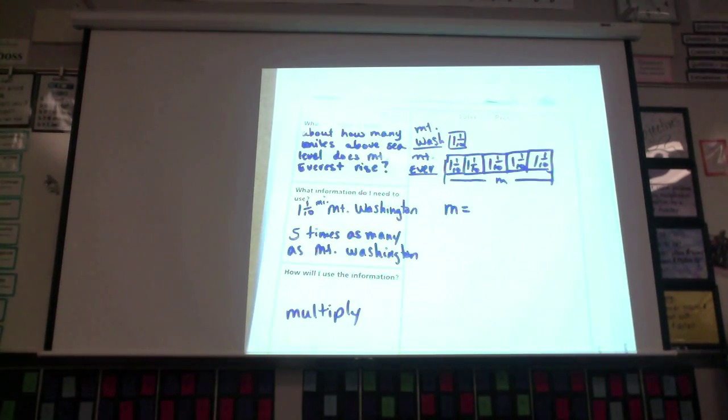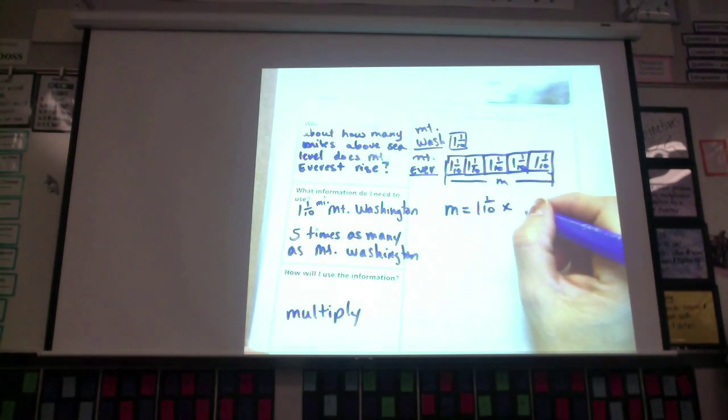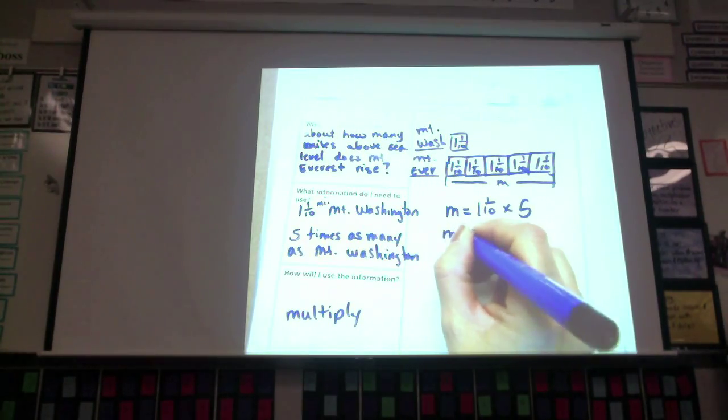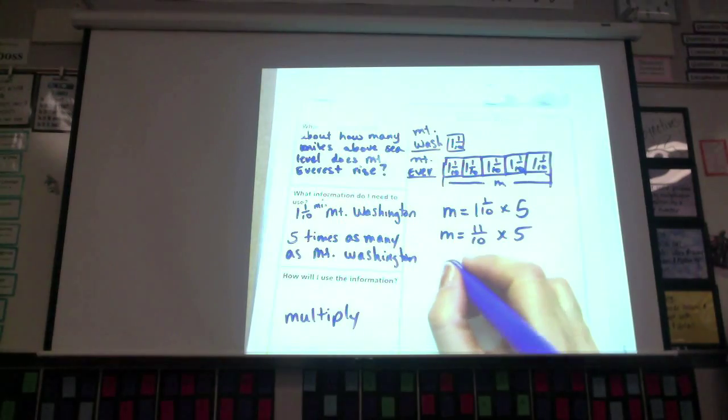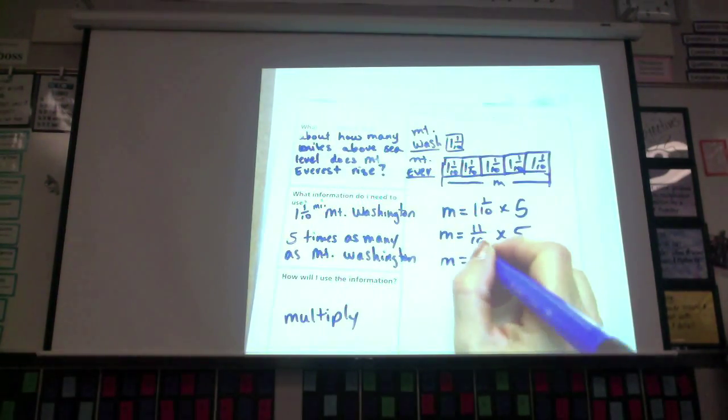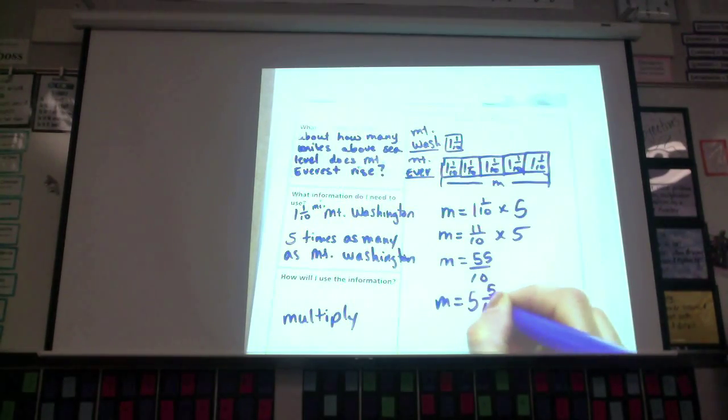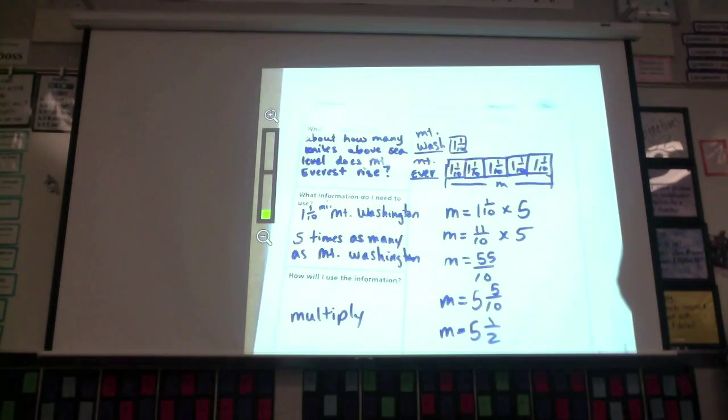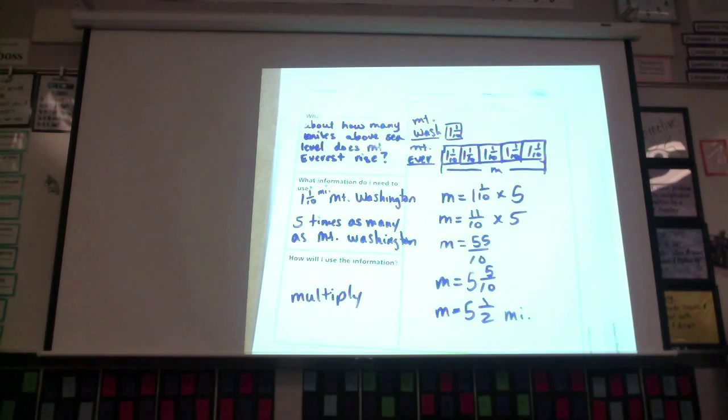All right, so to find the miles for Mount Everest, I'm going to do one and one-tenth times what? Six. Why six? Five. Go ahead and change your mixed number to an improper fraction. And what did you get? Eleven-tenths. Eleven-tenths times five. Go ahead and multiply that out. And what did you get? Fifty-five-tenths. Change it back to a mixed number. What did you get, Sean? Five and five-tenths. And who can be nice and fancy and make it simplified? Nicholas? Five and one-half. And I'm actually missing something in my answer. Does anybody know what I'm missing to make it a complete answer? Nicholas? Miles. Right? You should be putting the unit. So, five and a half miles.